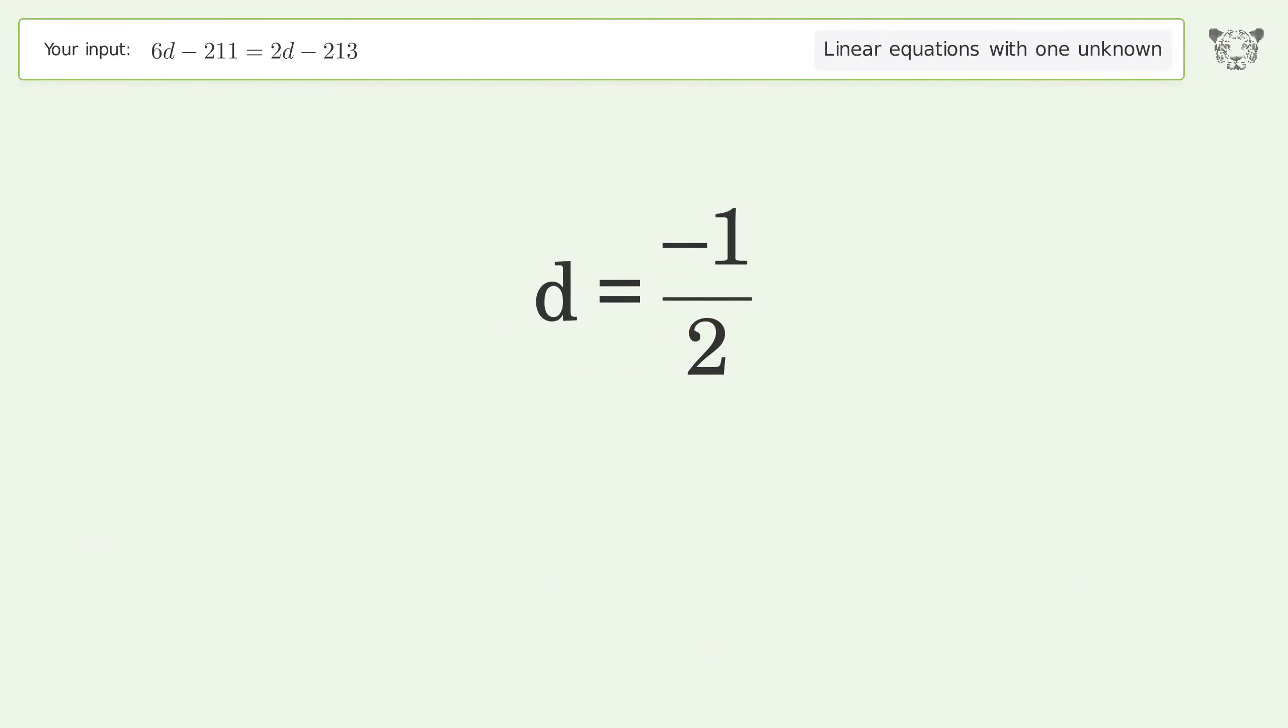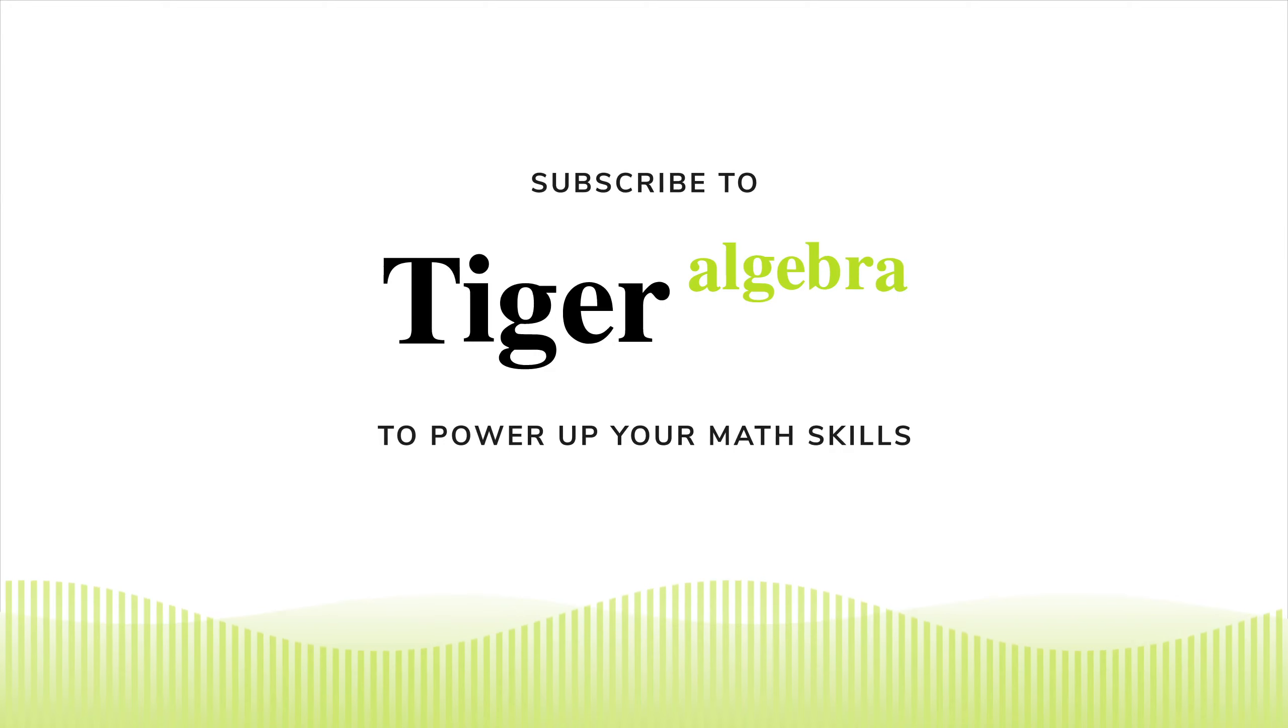And so the final result is d equals negative one over two.